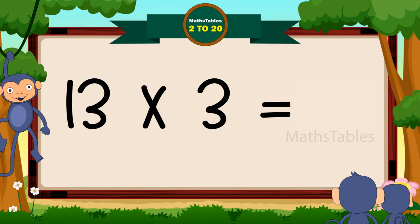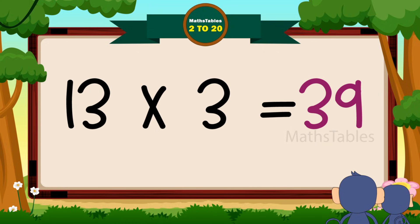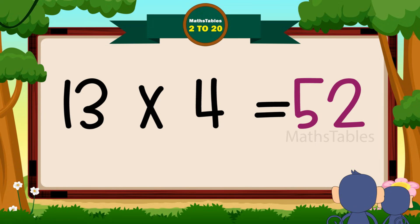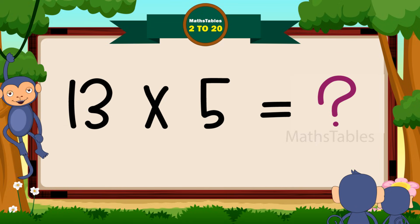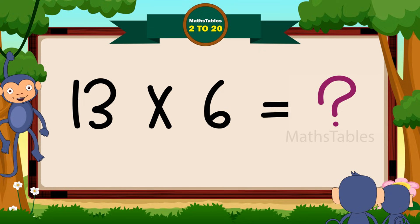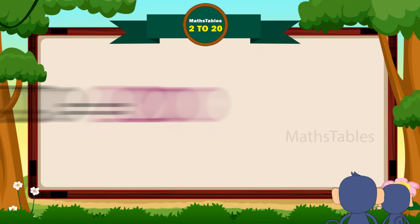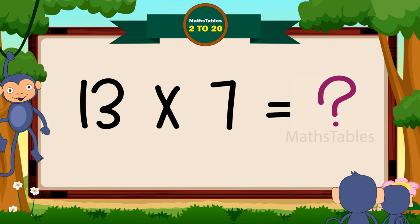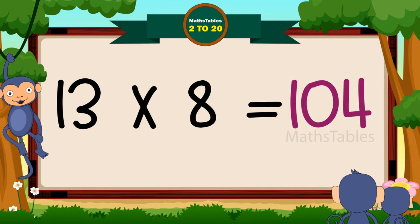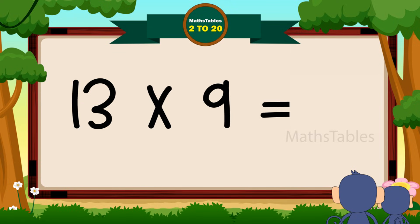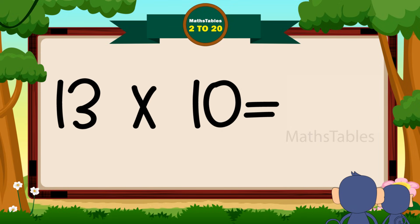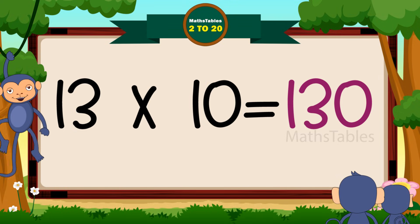Thirteen twos are 26. Thirteen threes are 39. Thirteen fours are 52. Thirteen fives are sixty-five. Thirteen sixes are seventy-eight. Thirteen sevens are ninety-one. Thirteen eights are hundred-four. Thirteen nines are hundred-seventeen. Thirteen tens are hundred thirty.